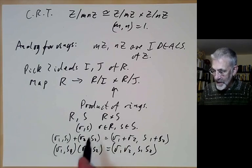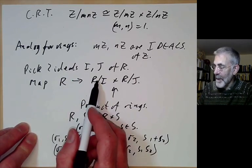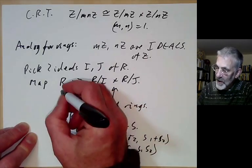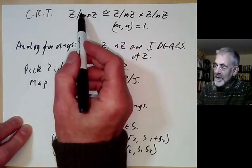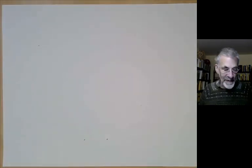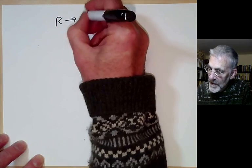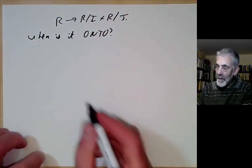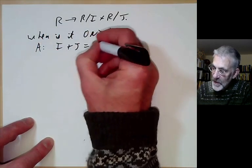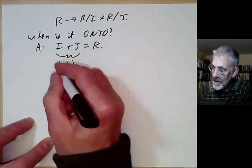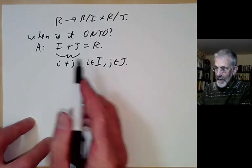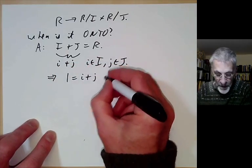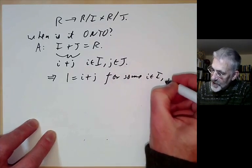We have a map from R to R/I × R/J, taking r to its image in each quotient. This looks like the Chinese Remainder Theorem. We can ask: when is this map onto? The answer is: it's onto when I + J = R, where I + J is the set of elements i + j for i in I and j in J. If I + J = R, this implies 1 = i + j for some i in I and j in J.